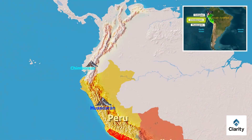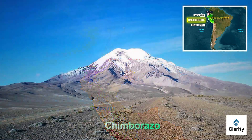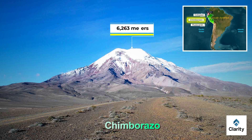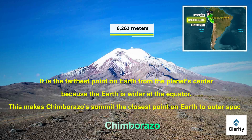Mount Chimborazo is in Ecuador, with a height of 6,263 meters. It is the farthest point on Earth from the planet's center because the Earth is wider at the equator. This makes Chimborazo's summit the closest point on Earth to outer space.